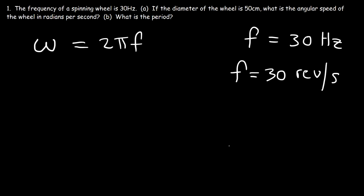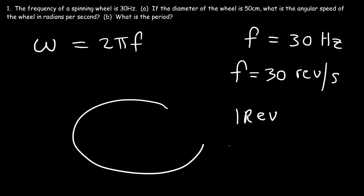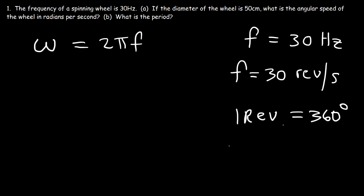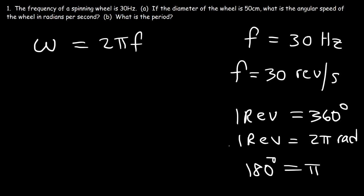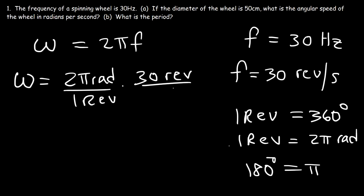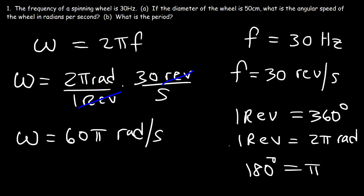When you think of 2 pi, one revolution around a circle is equal to 360 degrees, and 360 degrees is 2 pi radians, because 180 degrees equals pi. So omega equals 2 pi radians per revolution multiplied by the frequency of 30 revolutions per second. The unit revolutions cancels, giving you the angular speed in radians per second. So omega is 2 pi times 30, which is 60 pi, or approximately 188.5 radians per second.